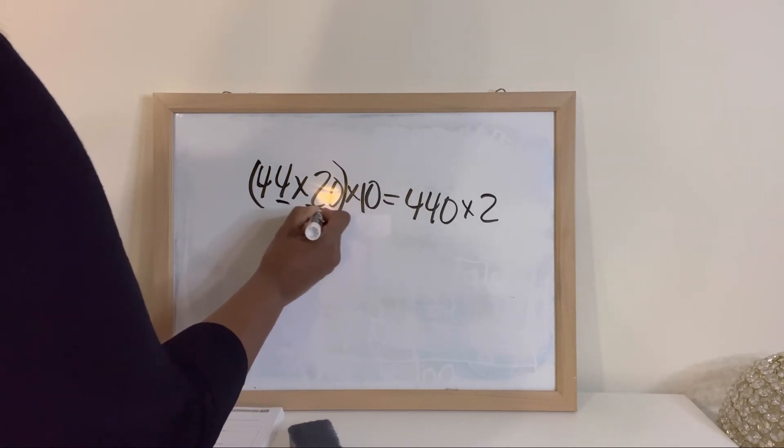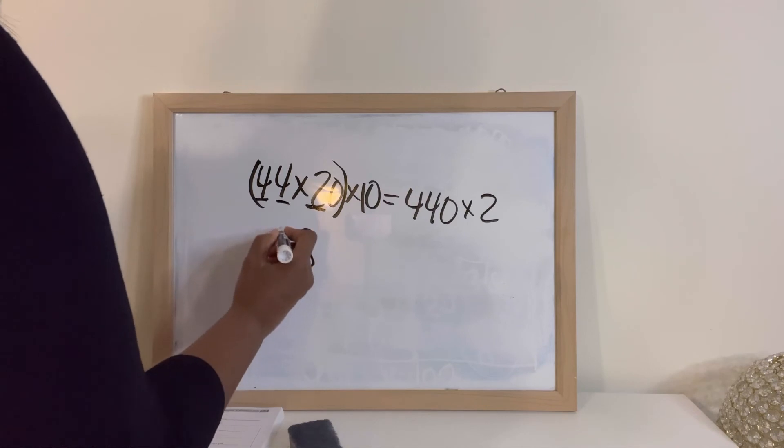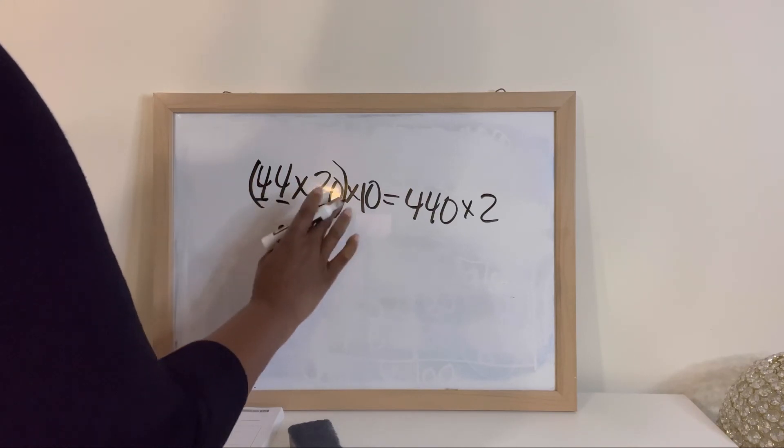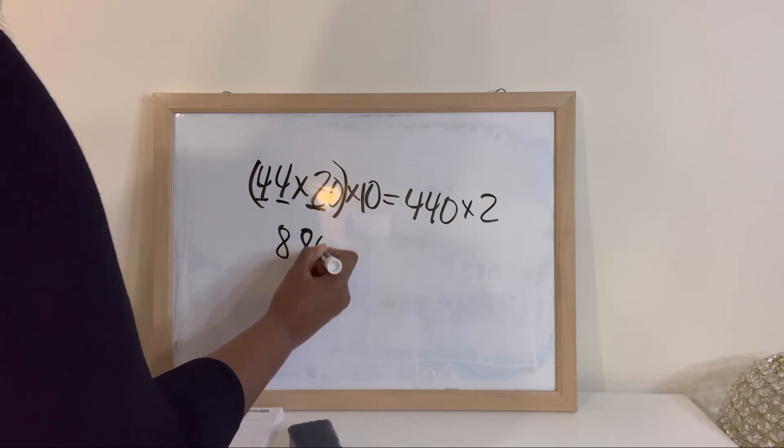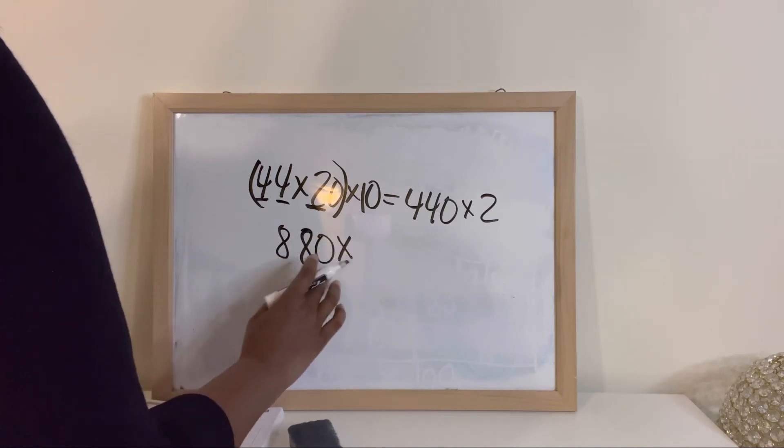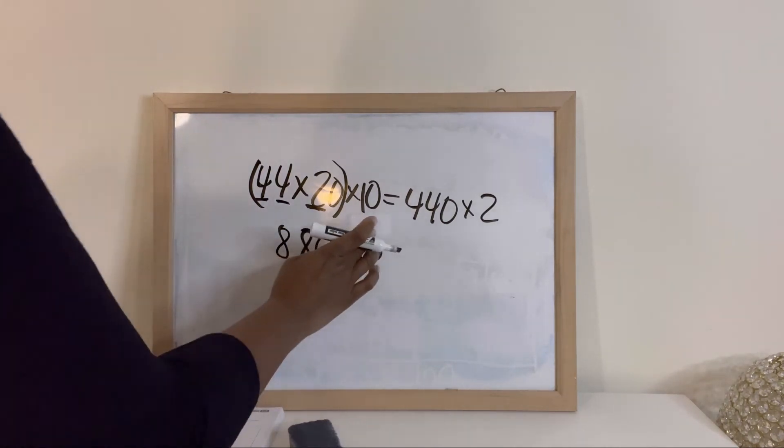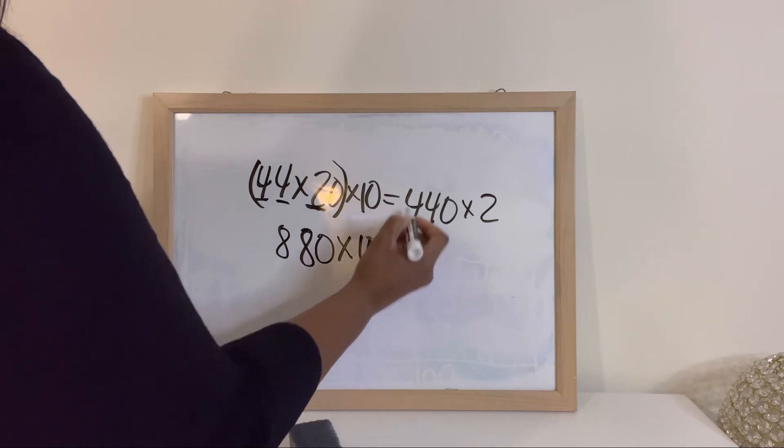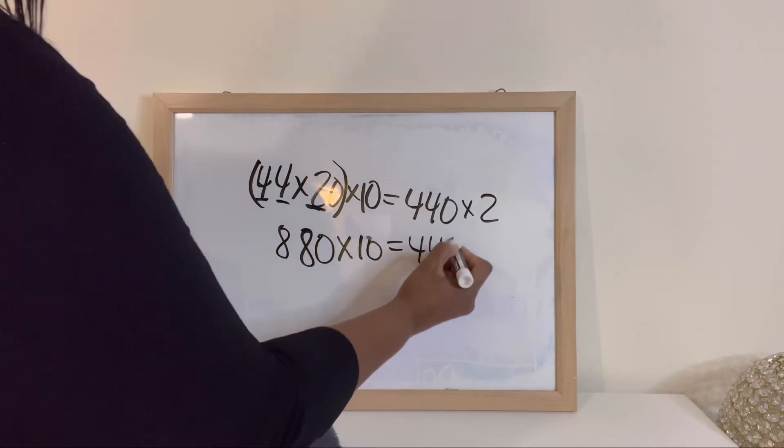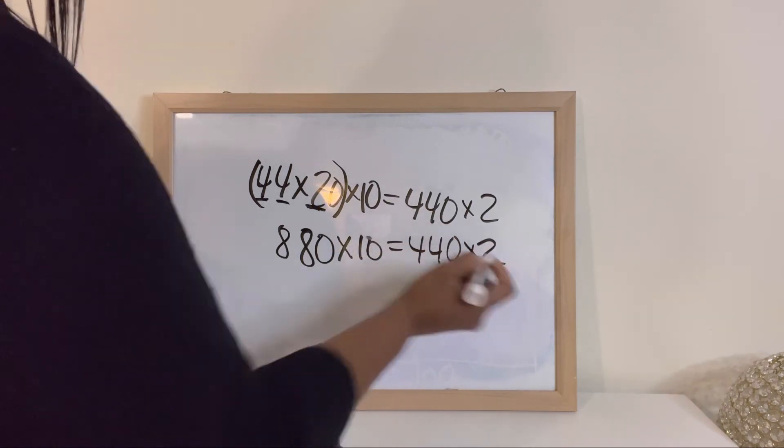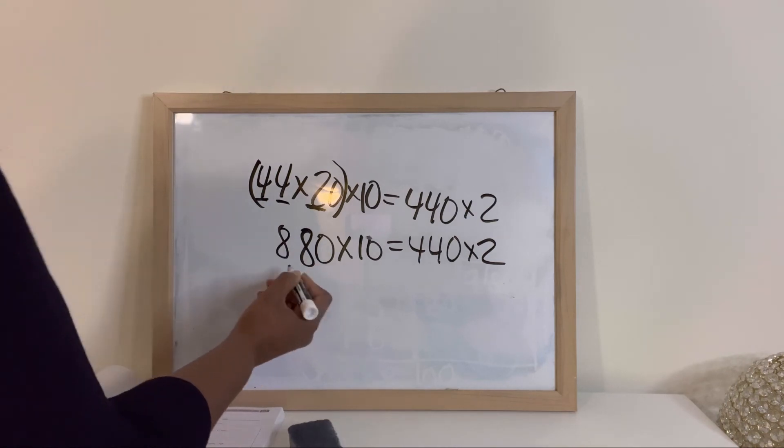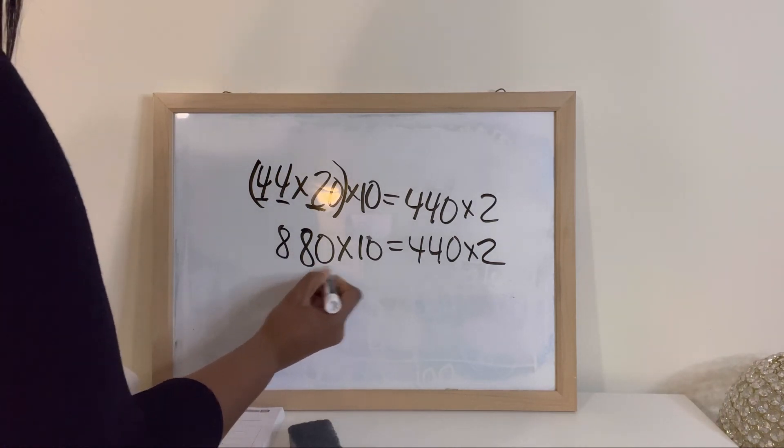So I will start with, remember, you don't have to worry about multiplying the zero. So you will do 2 times 4, that will give you 8. Then again, you would do 2 times this 4, and that will give you 8. And then you would go up here and count how many zeros are in your factors, that will give you 1. And then you would do 880 times 10. So you bring that down.